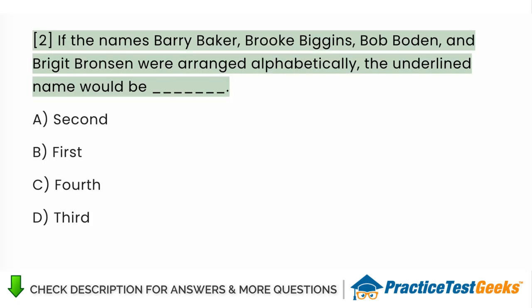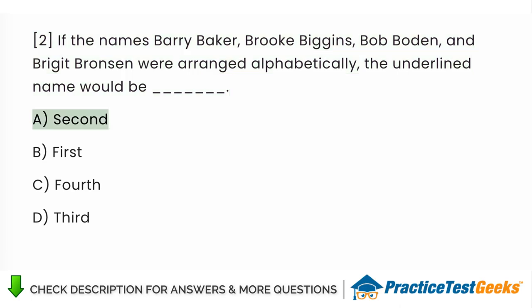If the names Barry Baker, Brooke Biggins, Bob Bowden, and Bridget Bronson were arranged alphabetically, the underlined name would be A. Second B. First C. Fourth D. Third